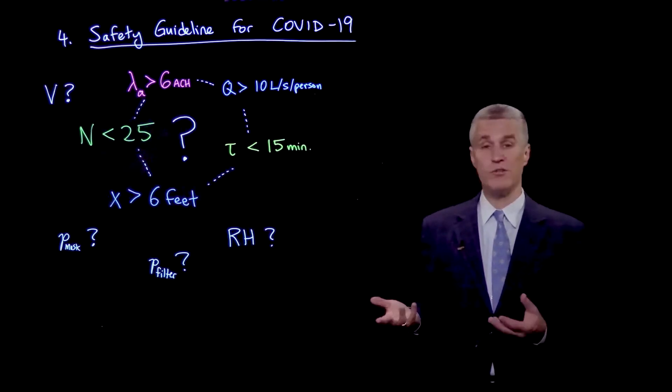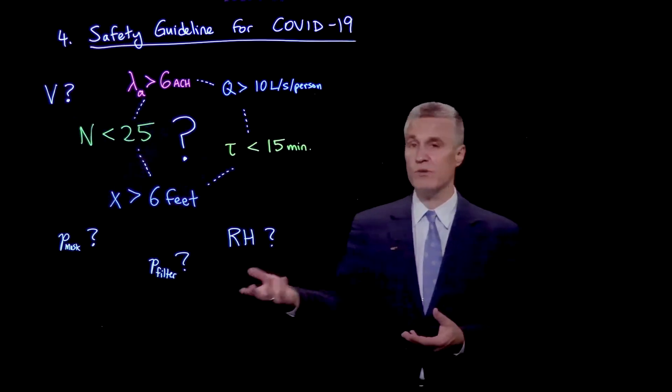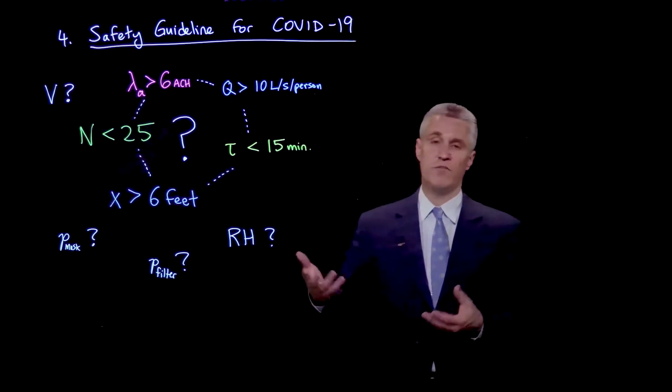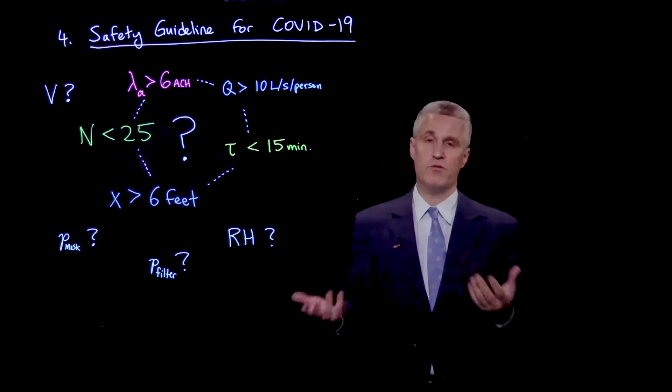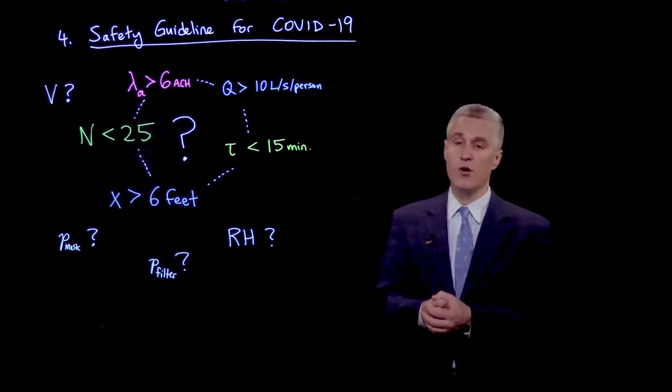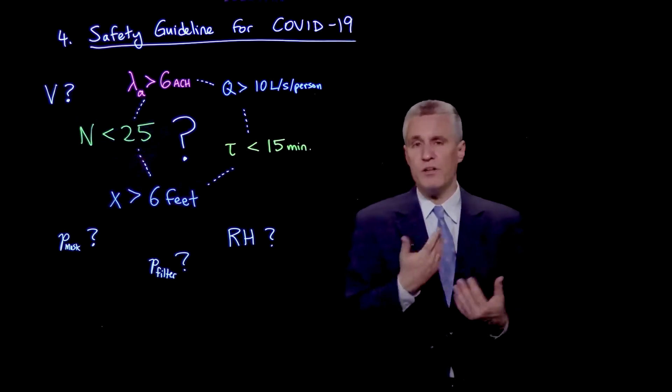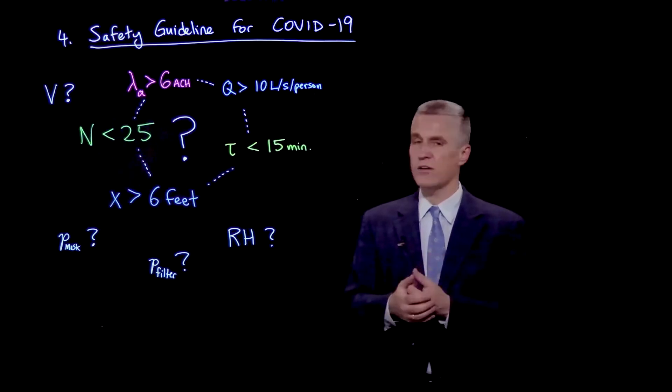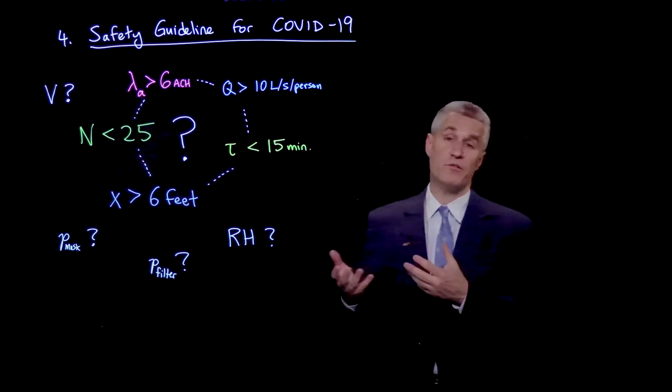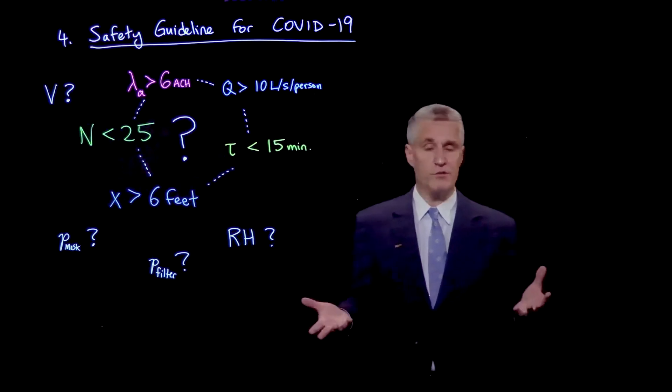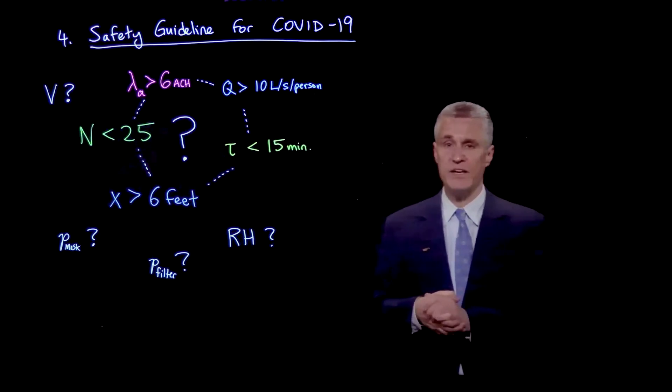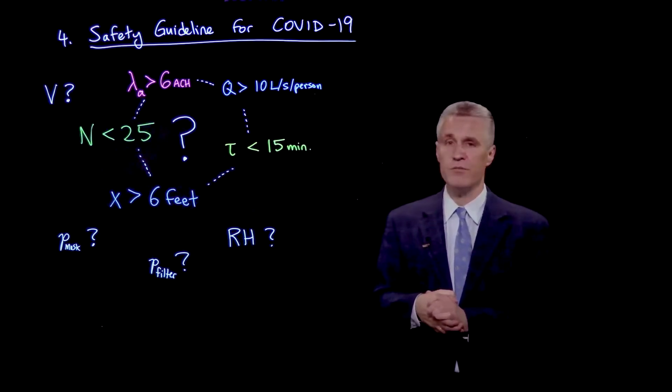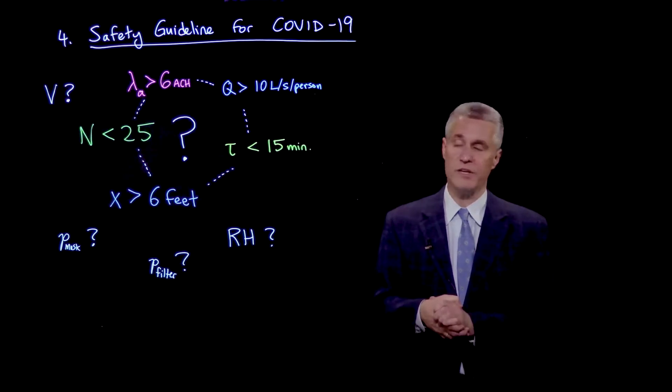And then what about other variables that we don't explicitly control, like relative humidity or filtration efficiency, if you're using filters to filter the air? Or if you're wearing masks, the quality of the masks, how well does that come in? How about the volume of the space? It's not just the flow rate, but it's also the geometry, even the area or the length of the space. So somehow all these variables must be related.